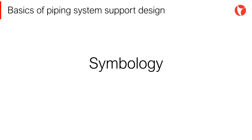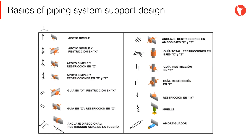The supports selection process is an iterative process in which the designer studies the system restrictions and proposes a configuration for the supports. This configuration is then evaluated by the flexibility analyst, who generates a flexibility isometric by ratifying or rectifying the design of the proposed supports. Since this process is iterative, it is necessary to have a clear and simple symbology to assist communication between the parties involved. As seen on the screen, all types of supports can be combined, resulting in supports performing different functions simultaneously.